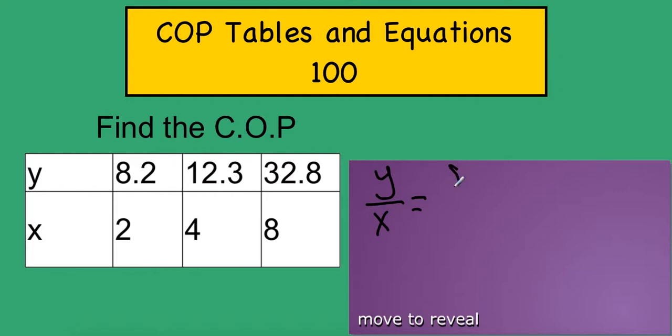Here I have 8.2 over 2. Remember, you can use any of these values as long as you put them with their corresponding values. So 8.2 and 2 correspond. You can even use 12.3 and 4, or 32.8 and 8. Those all work. Once I solve this problem, I see that my constant of proportionality is 4.1. So I would write that k equals 4.1.